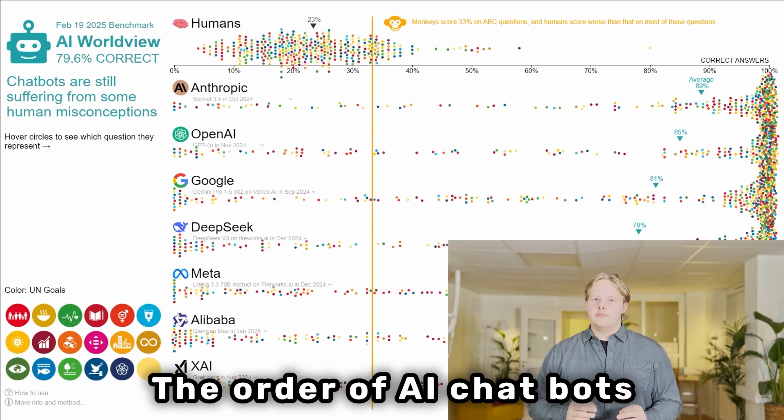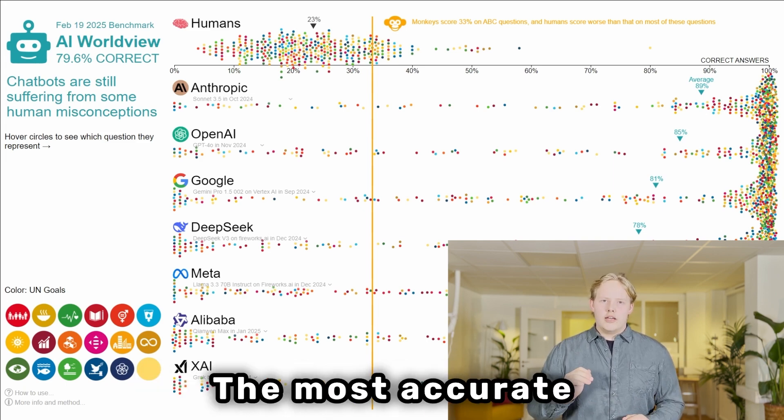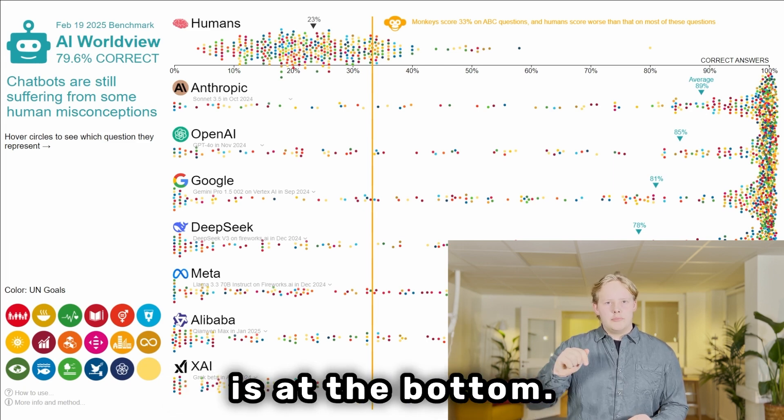The order of AI chatbots is based on their average correctness across all questions. The most accurate AI bot is at the top whilst the least accurate one is at the bottom.